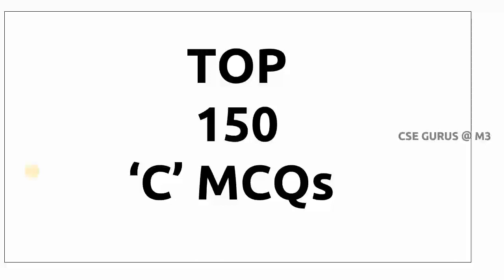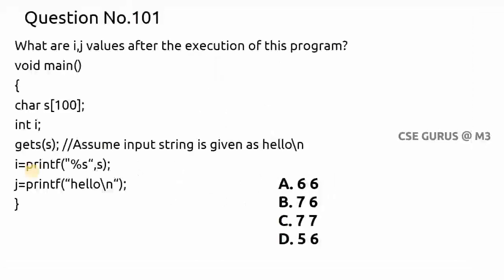Please watch it carefully. Coming to question number 101: what are i and j values after the execution of this program? Here it is given: char s[100], which is a string variable, and int i, an integer variable. I have used gets() to read a string. Assume the input string is given as 'hello\n', so I am giving input as 'hello' and '\n'.